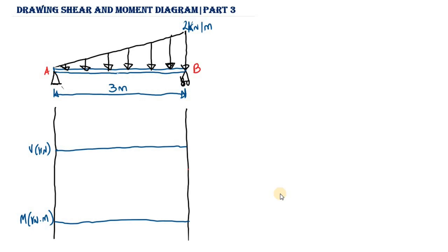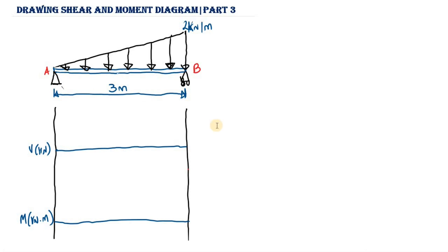We have a beam that has a length of three meters, and on this beam we have a triangular distributed load of 2 kN per meter distributed across the length of the beam. We have a pin support at point A and a roller support at point B, and we are going to draw the shear and bending moment diagram for this beam.